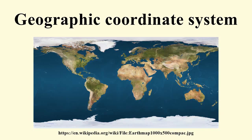Ptolemy's second century geography used the same prime meridian but measured latitude from the equator instead, rather than measuring latitude in terms of the length of the midsummer day. After their work was translated into Arabic in the 9th century, Al-Khwarizmi's Book of the Description of the Earth corrected Marinus and Ptolemy's errors regarding the length of the Mediterranean Sea, causing medieval Arabic cartography to use a prime meridian around 10 degrees east of Ptolemy's line.